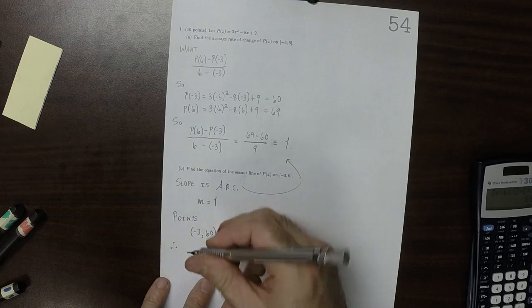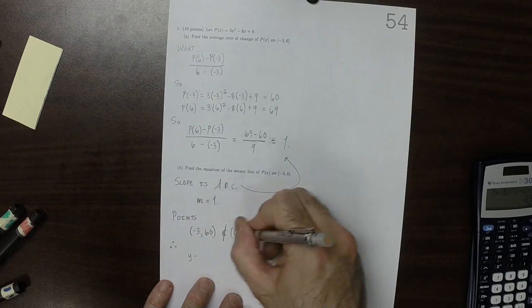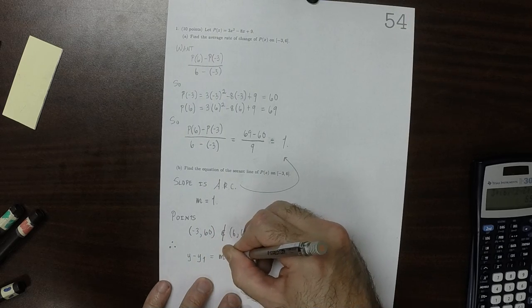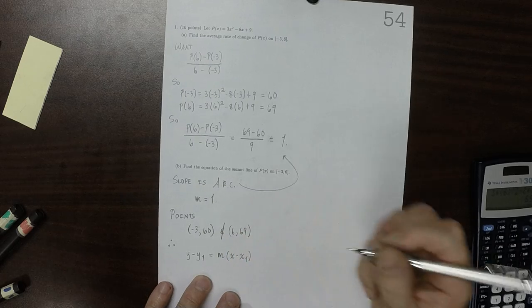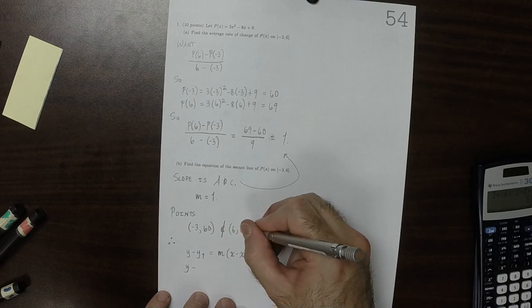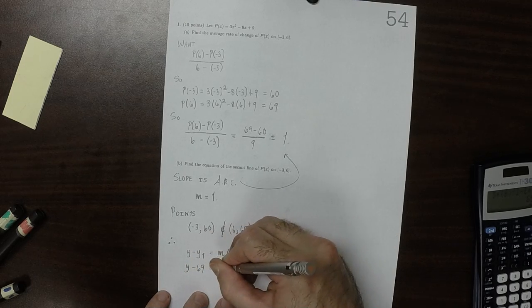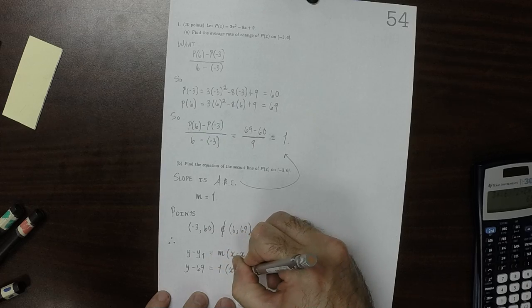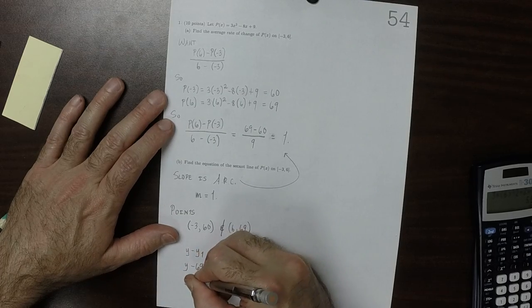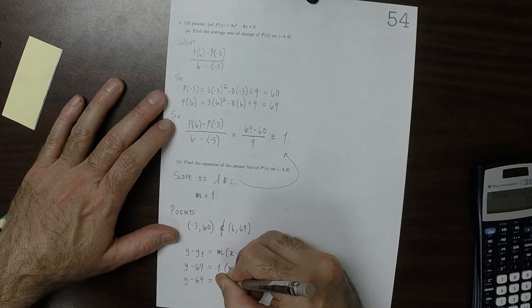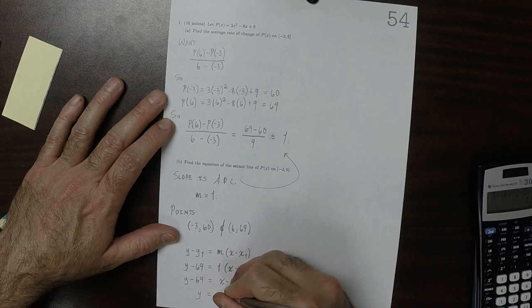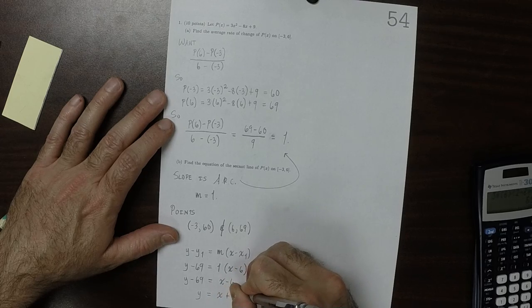And therefore, for the equation, we can use either one of those points. y minus y1 equals m times x minus x1 is the point-slope equation for a line, so y minus 69 equals 1 multiplied by x minus 6, so y minus 69 is x minus 6, so y is x plus 63.